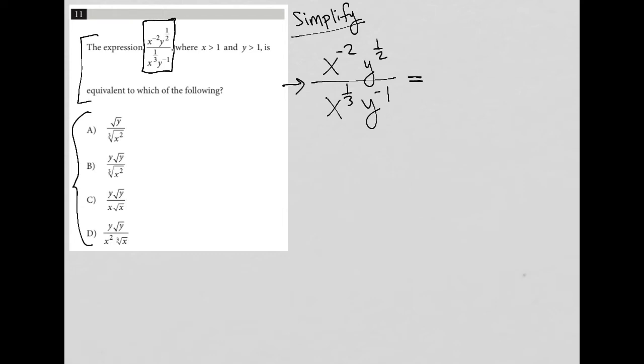This x to the negative second power here should actually go down into the denominator as x to the positive second power, because that's what a negative exponent does. If you're in the numerator, you move down; if you're in the denominator, you move up.